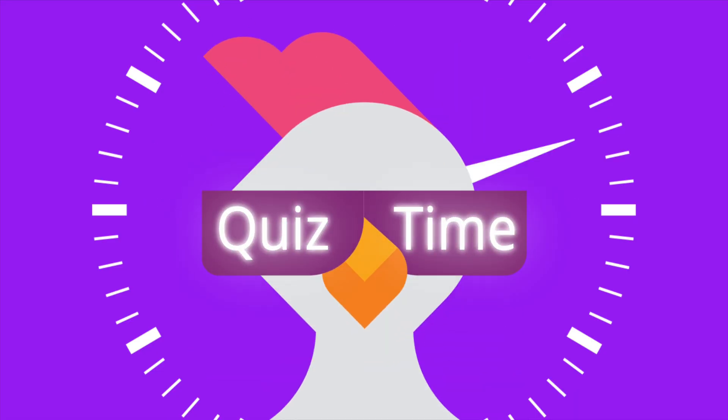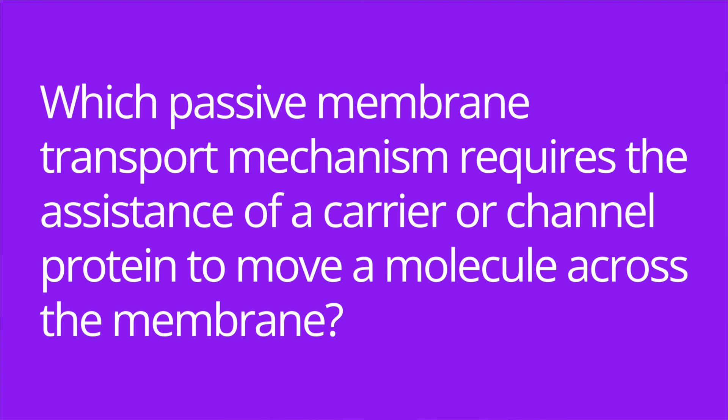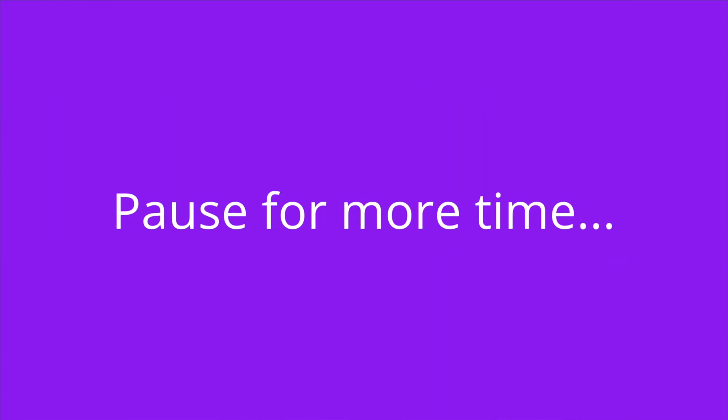It's quiz time and I have five questions for you. Question number one: which passive membrane transport mechanism requires the assistance of a carrier or channel protein to move a molecule across the membrane? The answer is facilitated diffusion.